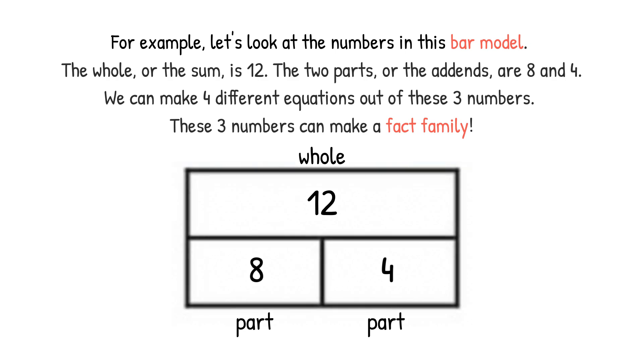For example, let's look at the numbers in this bar model. The whole or the sum is 12. The two parts or the addends are 8 and 4. We can make four different equations out of these three numbers. These three numbers can make a fact family.